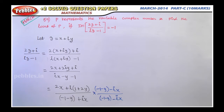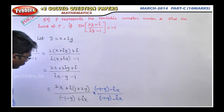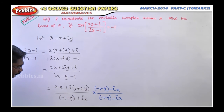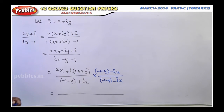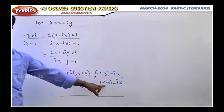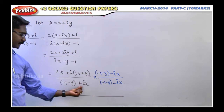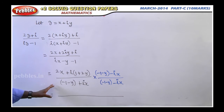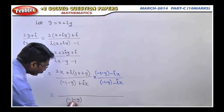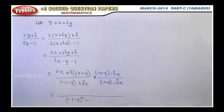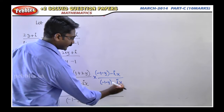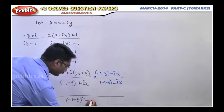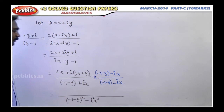For the denominator multiplication, we use the formula (a + b)(a - b) = a² - b². Here a = (-1 - Y) and b = iX, so the denominator becomes (-1 - Y)² - (iX)² = (-1 - Y)² - i²X² = (-1 - Y)² + X², since i² = -1.